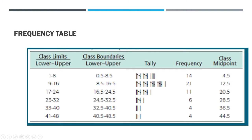So our class width is 8. The first class is 1 to 8, with boundaries 0.5 and 8.5. Then 9 to 16, 17 to 24, 25 to 32 — notice that the distance between the lower limits of consecutive classes is always 8. We tally: if a value is 4, it belongs to the first class. We count and tally to get the frequency for each class, and we also compute the class midpoint — the midpoint exactly between the lower and upper limits of each class.